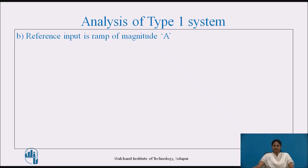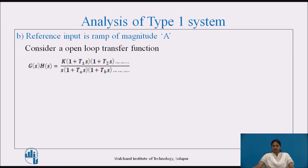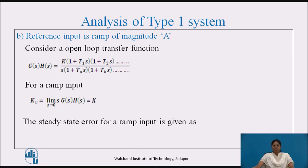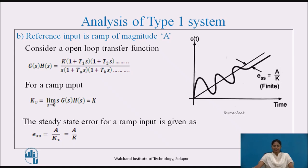Let's see the analysis of Type 1 system for the next reference input of ramp of magnitude A. The open loop transfer function is G(S)H(S) equal to K into (1 + T1S)(1 + T2S) divided by S into (1 + T2S)(1 + TbS). For a ramp input, the error coefficient Kv equals limit S tends to 0, S into G(S)H(S). After solving, we get Kv equal to K. The steady state error is A/Kv, and substituting Kv equal to K gives steady state error equal to A/K. Type 1 system follows the ramp input with finite error A/K. The output is shown in the figure where the steady state error is finite.